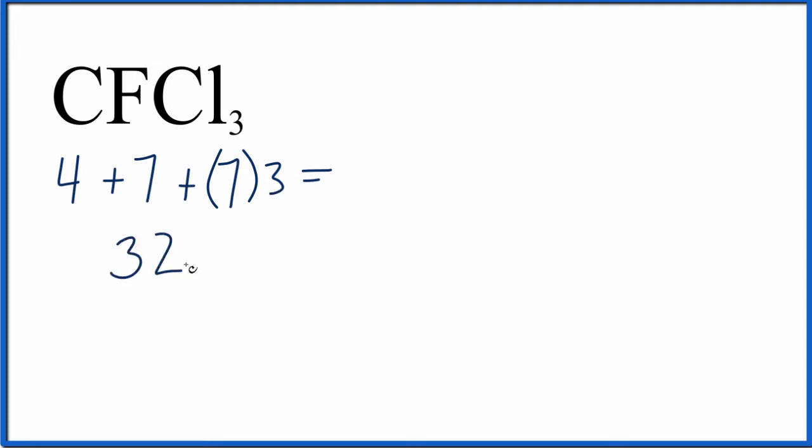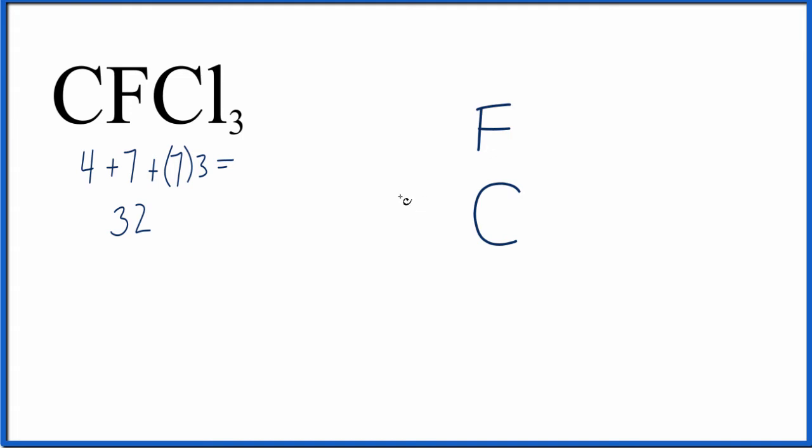That's 32 valence electrons for the CFCl3 Lewis structure. We'll put the least electronegative atom in the center of this Lewis structure—that's the carbon, that goes right there. Then we'll put the fluorine up here and the chlorines around the carbon.